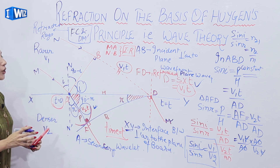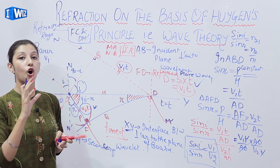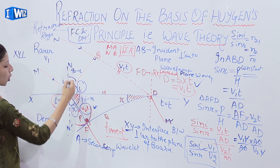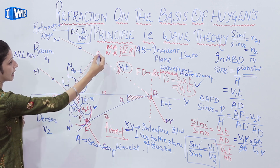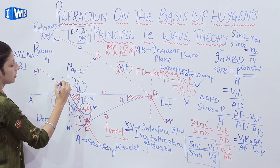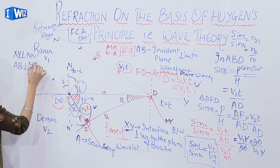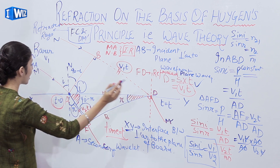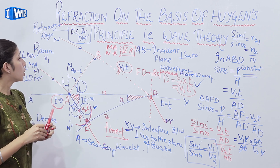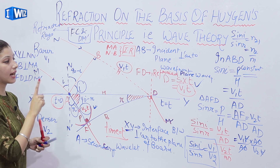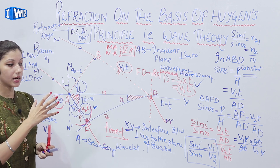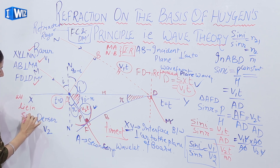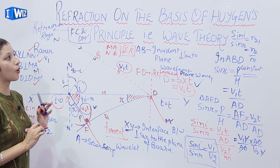For the second law of refraction, we prove that the incident ray, normal, and refracted ray all lie in the same plane. XY, AB (incident wavefront), and FD (refracted wavefront) all lie in the plane of the board. Their respective perpendiculars — MA (incident ray), DM' (refracted ray), and NN' (normal) — all lie in the same plane. Hence the second law of refraction is also proved.